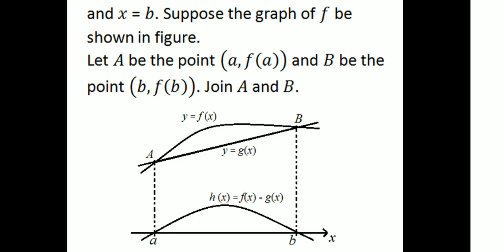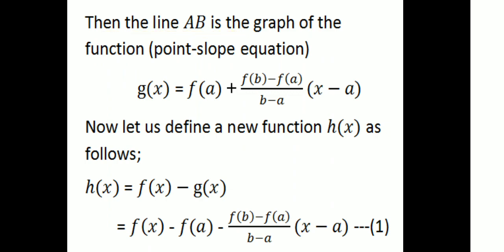Suppose the graph of f is as shown. Then the point corresponding to a is (a, f(a)) and the point corresponding to b is (b, f(b)). Joining these two points, we have the line y = g(x).